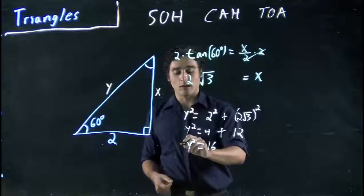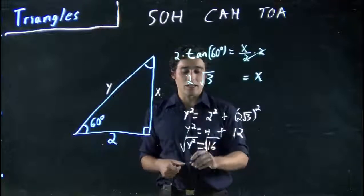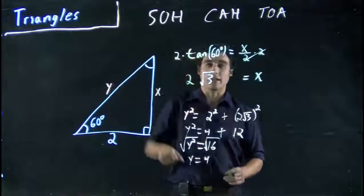If we want to cancel out a square, we take square root of both sides, or put it to the power of 1 half. Remember, same difference, same meaning. So we get Y equals 4. I've got my hypotenuse length now.